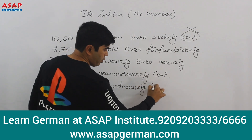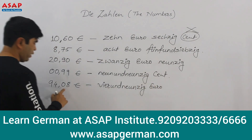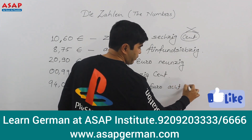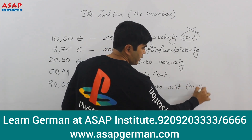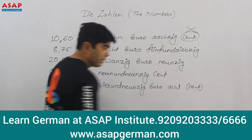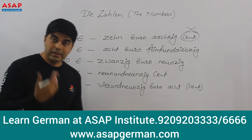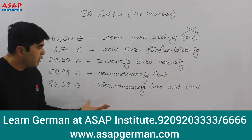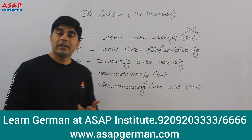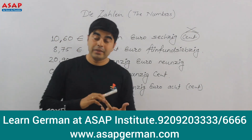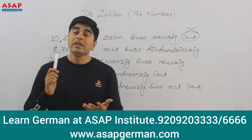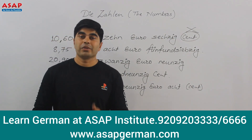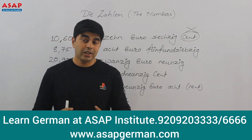So the word 'Cent' does exist, but it is not said when there are euros together with cents. You understood? Now all numbers are done — how to read numbers even after hundreds and thousands, how to read years, and how to read prices in German. Everything is done about numbers.